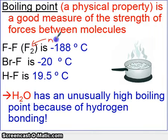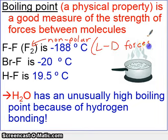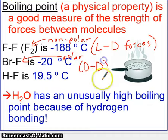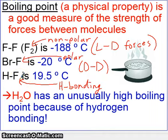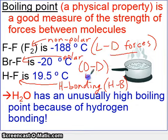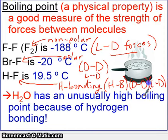F2 is nonpolar, so it only has London dispersion forces operating. BRF is polar, so it has dipole-dipole forces operating. But HF has hydrogen bonding, because you have a hydrogen directly on one of the three most electronegative elements — fluorine is one of which. Recall that every molecule has dispersion forces, so BRF has dipole-dipole and London dispersion, while HF has hydrogen bonding, dipole-dipole, and London dispersion. So HF has the strongest bonds, and that's why it has the highest boiling point.